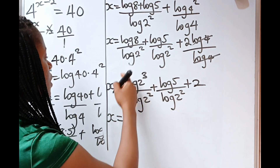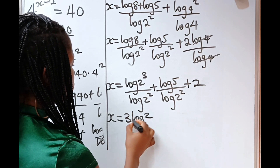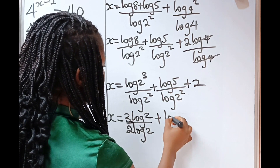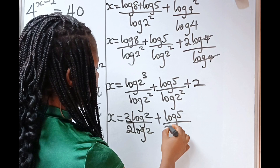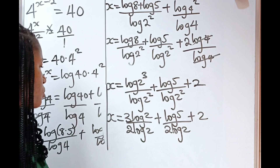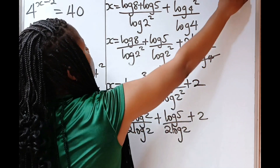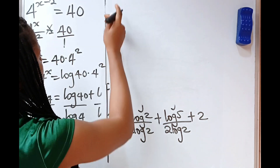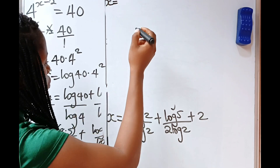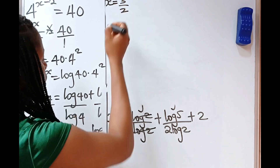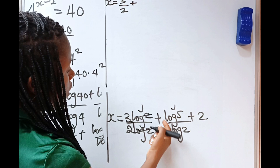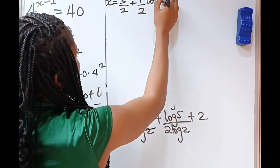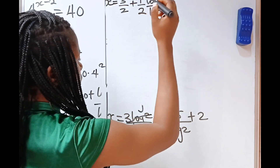Now, x is equal to — 8 is the same thing as log 2 to the power of 3 — divided by log 2 squared, plus log 5 divided by log 2 squared, plus 2. So, this 3 will come down to become 3 log 2 over 2 log 2, plus log 5 divided by 2 log 2, plus 2.